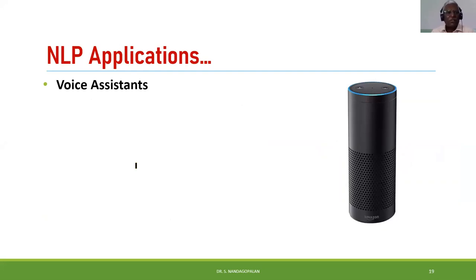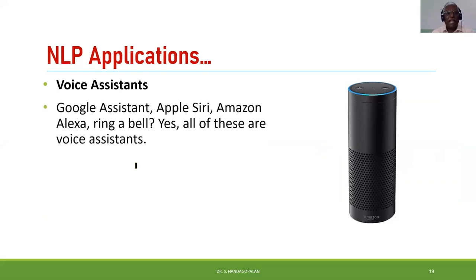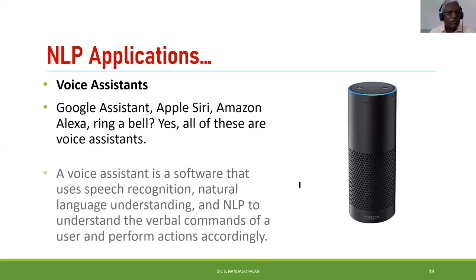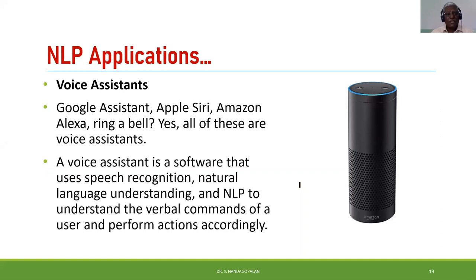Not only text-based processing but also voice can be used — voice converted to text, stored in arrays, and then processed. For this we have voice assistants like Alexa (Amazon), Siri (Apple), and Google Assistant, now available even in TVs. Everything is done not through typing but through voice: voice is converted to text, stored in the array, and then processed. The voice assistant recognizes speech, applies data structure algorithms, stores in arrays, and provides appropriate service.